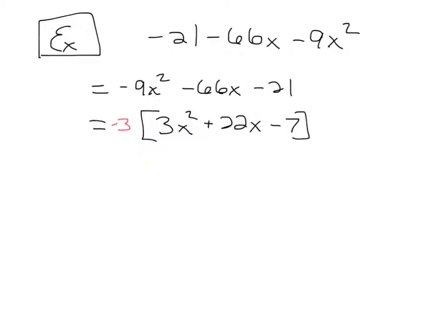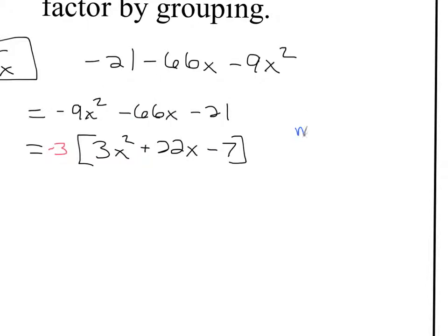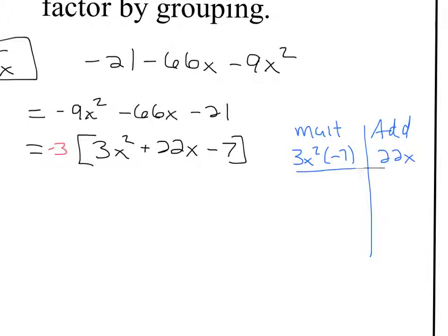We are going to make a little t-chart off to the right. In this t-chart, we're going to write down things that multiply to get 3x squared times negative 7, and we need two things that add to get 22x. Adding to get 22x is the middle term. Multiplying to get 3x squared times negative 7, we're multiplying the first term by the last term — that product is negative 21x squared. I made a mistake here: this should be a plus 7 because I factored out a negative 3, so we're multiplying to get a positive 21x squared.